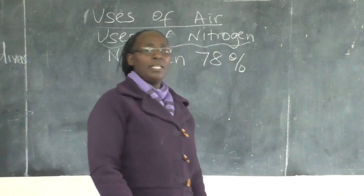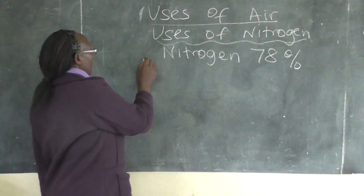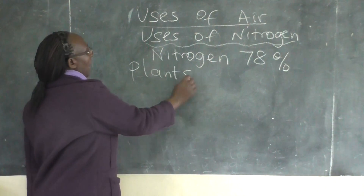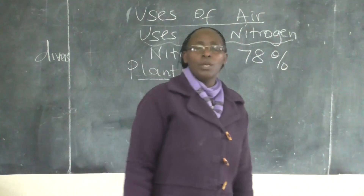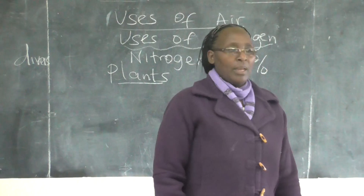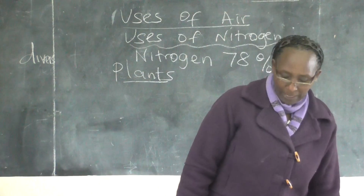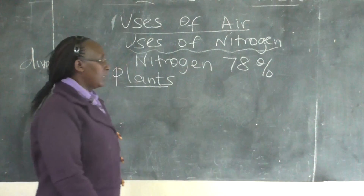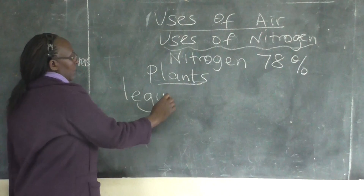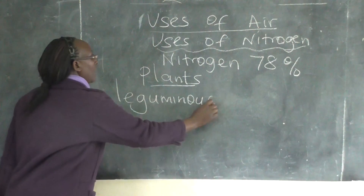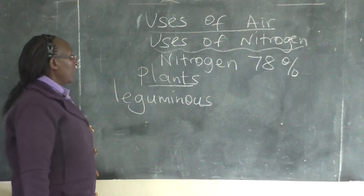Nitrogen is used in plants. Some plants — not all of them, but some plants — use nitrogen. We have those plants which are called leguminous plants. Can you say? Leguminous plants.